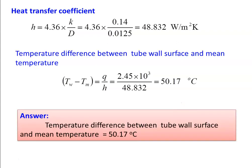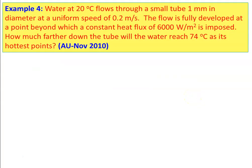Answer: the temperature difference between tube wall surface and mean temperature is 50.17°C. Example 4 is from university question paper, November 2010.